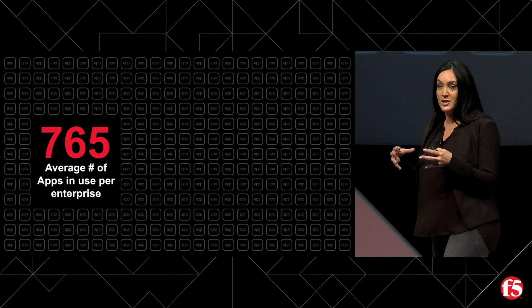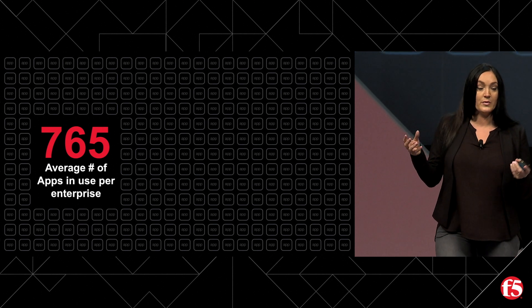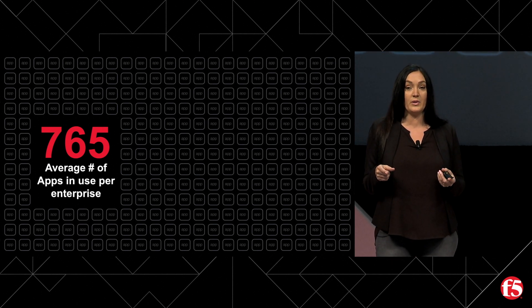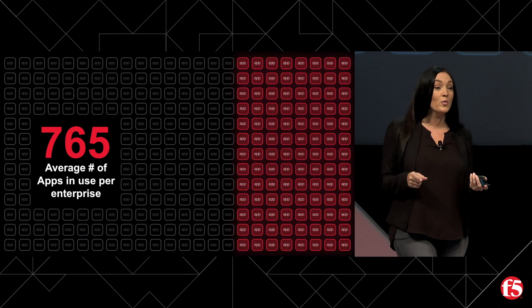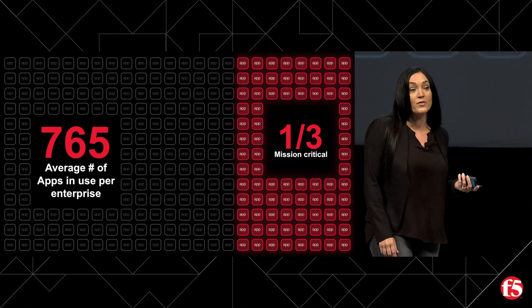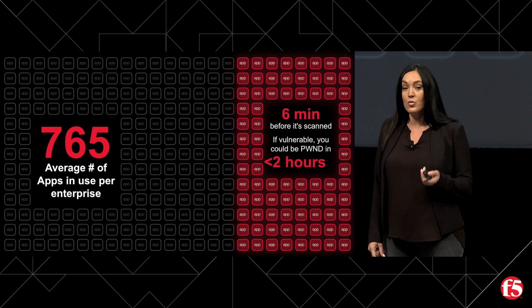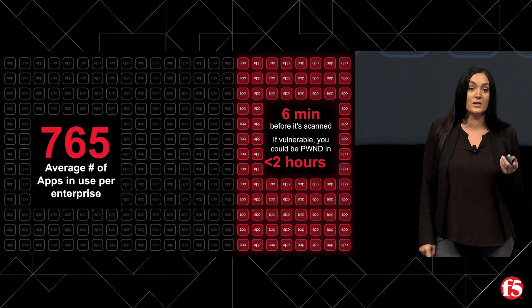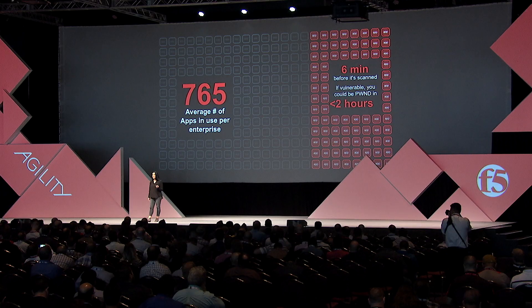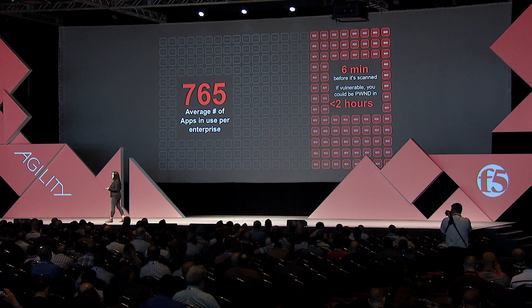Now that I've narrowed the scope to application security, let me blow that right back up. The average enterprise has 765 apps in play — an overwhelming amount to secure. One-third of them are mission critical. When you put an app online, it's not more than six minutes before it gets probed by an attacker, and if you're vulnerable, you'll be owned in less than two hours. This actually happened to me. Our corporate website at Demand Media was running WordPress. WordPress released a critical remote code execution vulnerability we couldn't auto-apply a patch to because we'd customized the CMS too much — don't do that, that's a tip. We were owned in less than two hours, and our corporate website was redirecting visitors to a shady car loan site out of Romania somewhere.